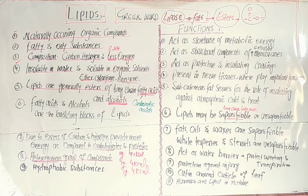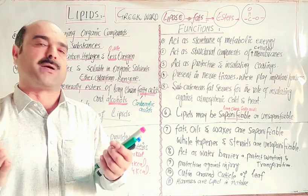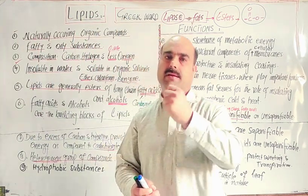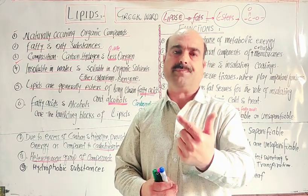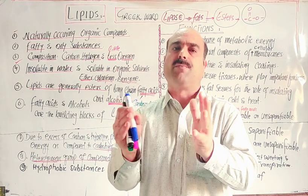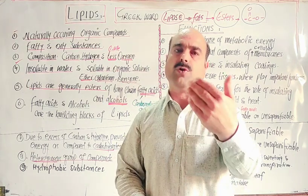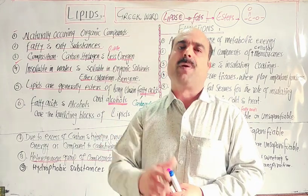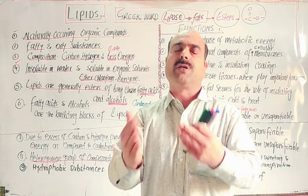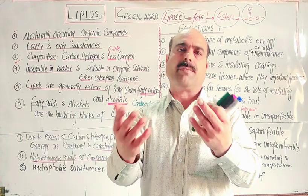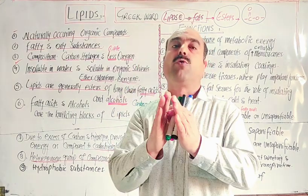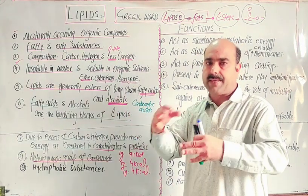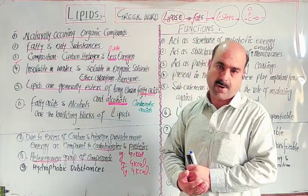Next, these are a heterogeneous group of compounds. Heterogeneous means their composition is different. Unlike carbohydrates or proteins, which are made of similar structural units like glucose or fructose, lipids have different basic units — that is why they are called a heterogeneous group of compounds.